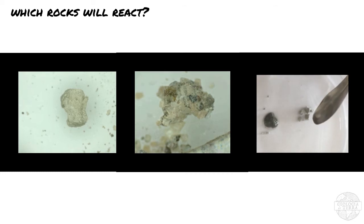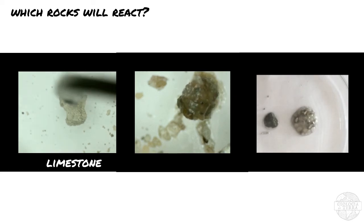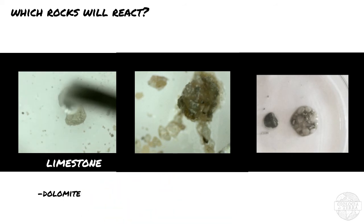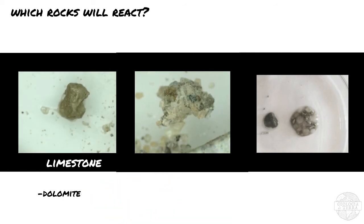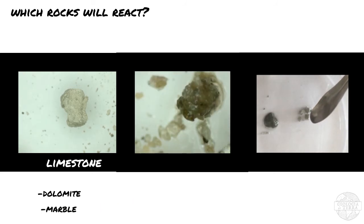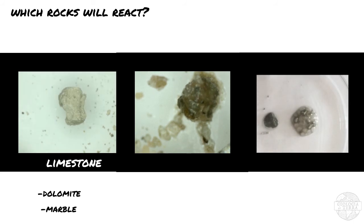Limestone, which is composed almost entirely of calcite, will show a vigorous fizz when it reacts with hydrochloric acid. Dolostone will show a weaker fizz because it is composed of dolomite that reacts less vigorously with hydrochloric acid. Marble is a carbonate rock that has been metamorphosed, so it will also react with acid, and the vigor of the reaction will depend on the rock from which it originated.